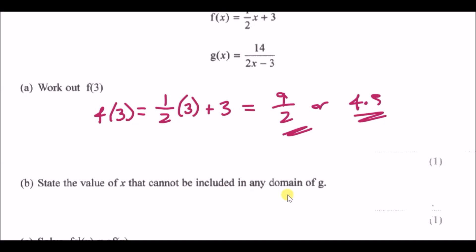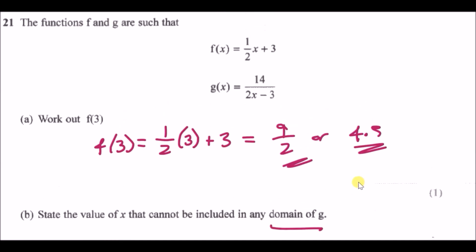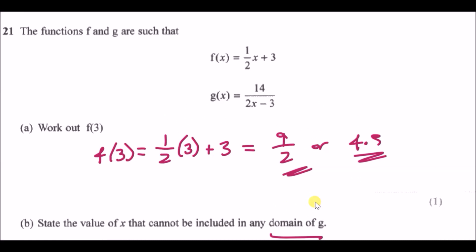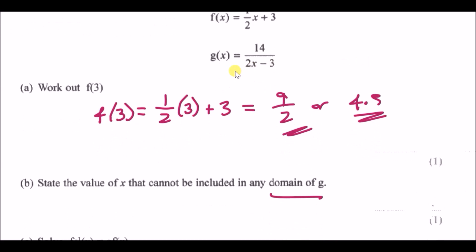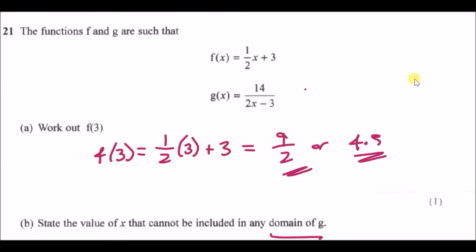When they say domain of g, that talks about the values of x you're allowed to use. There's a common rule: if you have a fraction, you can't divide by zero; if you have a square root, you can't take the square root of a negative number. For g, the denominator cannot be zero, so 2x minus 3 cannot equal zero.